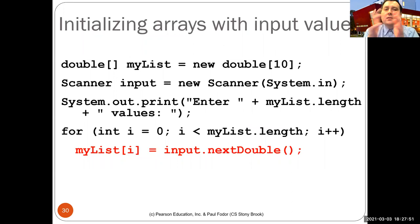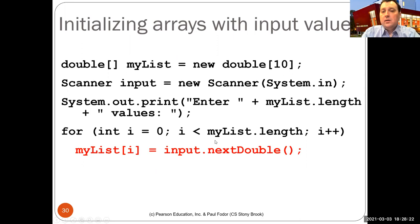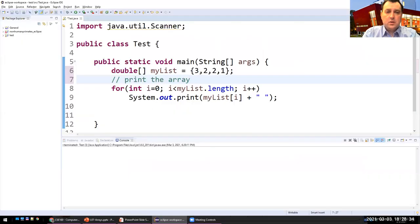How do we initialize an array with values entered by the user? The best approach is to create the array knowing exactly how many elements you need, then write a loop that iterates from zero to the length of the array and asks the user for each value. Each element is assigned 'input.nextDouble()'. Then you can print them.